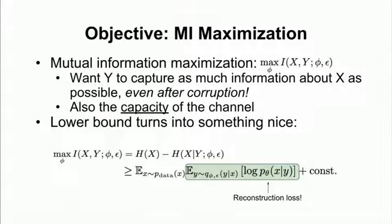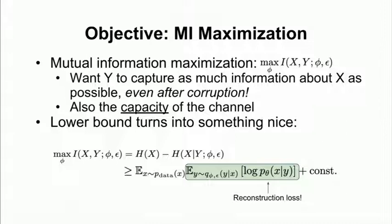But another thing that's also interesting about this objective that's really not obvious from this slide is the fact that in tackling this joint source channel coding problem, we learn this implicit model of the underlying data distribution. So what that means is that we can do something like generate new samples from the data set that we trained on. So intuitively, it's something like